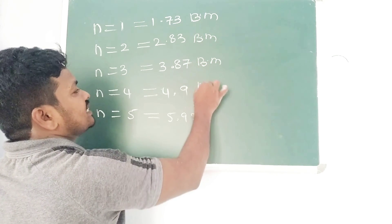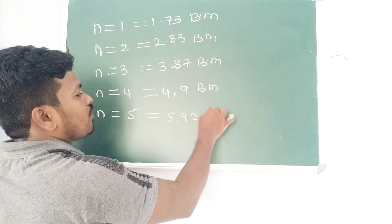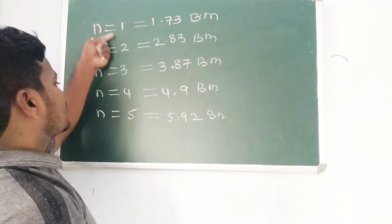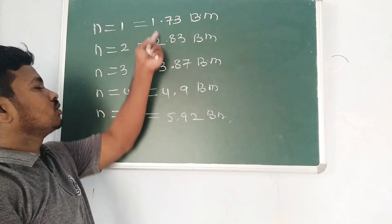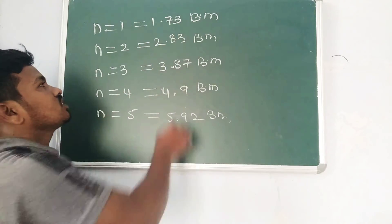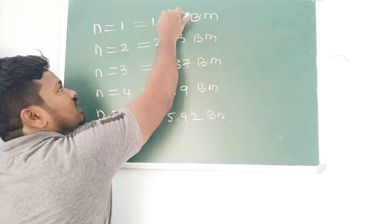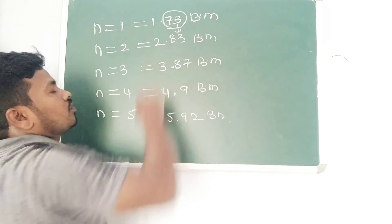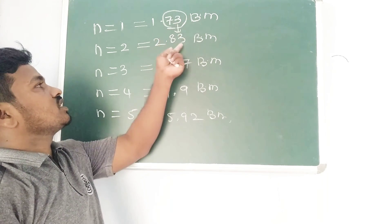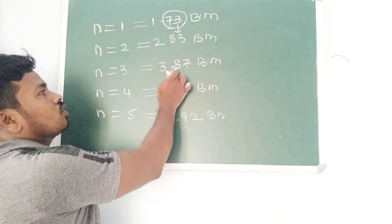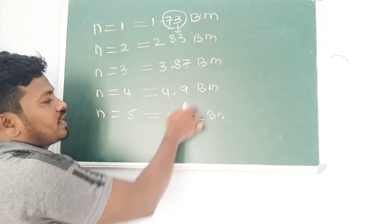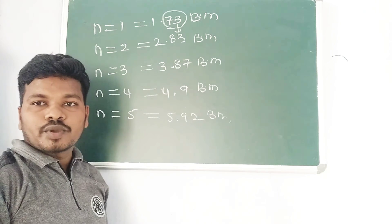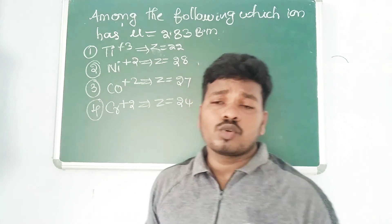It is very easy to remember: for one unpaired electron the value is 1.73. Just keep in mind the decimal parts: 73, 83, 87, 4.90, 5.92 — you can easily remember these values.